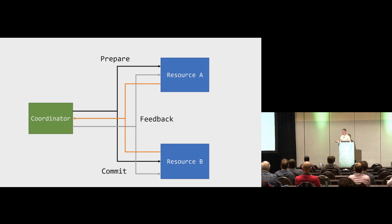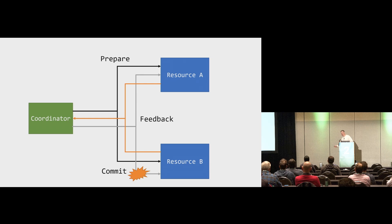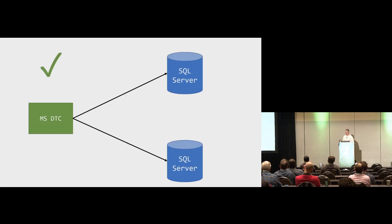The two-phase commit protocol is not bulletproof. If something fails during the commit phase, the first operation may have succeeded while the second failed. There are additional protocols — three-phase commit, N-phase commit — to make it more robust, with complicated rollback mechanisms. But you need to verify whether the resources you're using actually support two-phase commit.